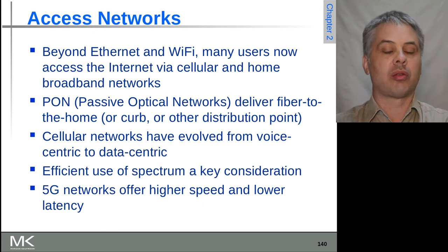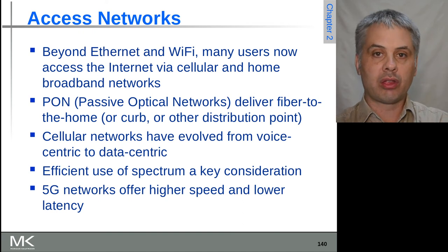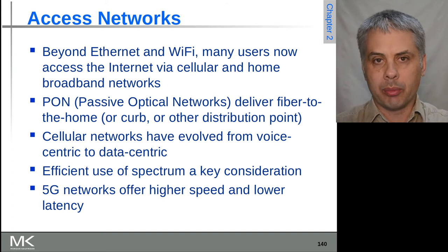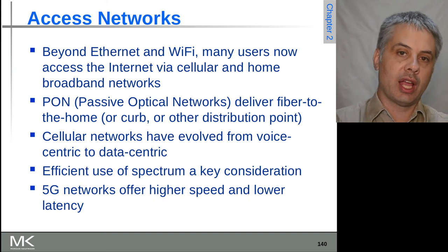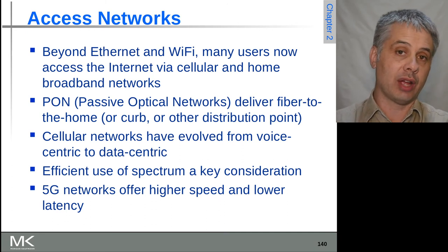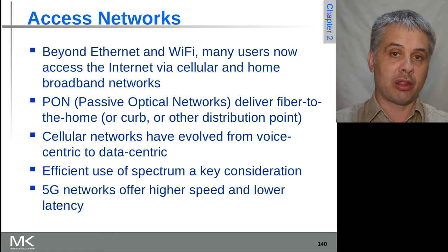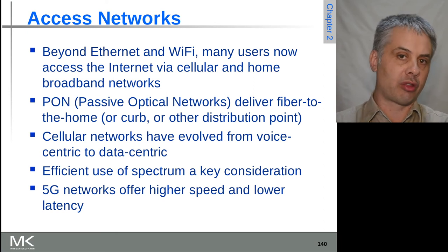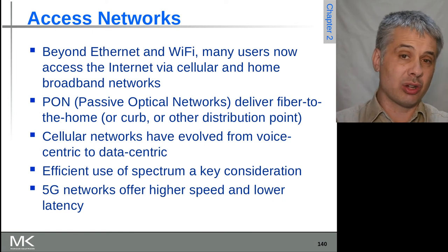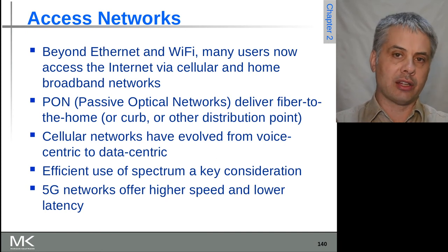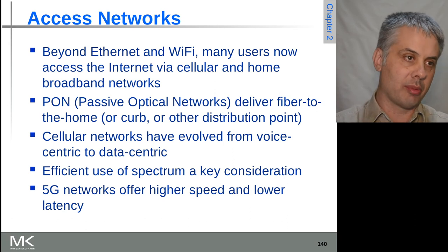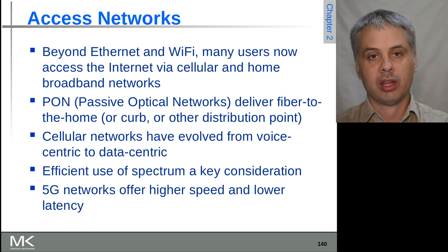2G had very slow data rates and very limited other services. 3G added decent data rates of around one megabit per second. 4G added higher data rates and much better masking of packet loss. 3G internet, even at its highest speeds — the 3.5G networks offering up to eight or ten megabits per second — was often quite annoying due to a combination of latency and unmasked packet loss that caused connections to time out.